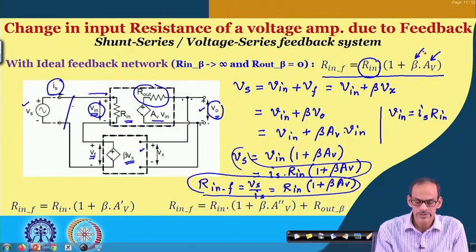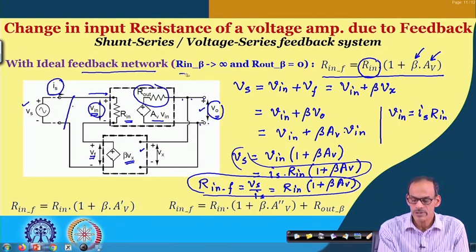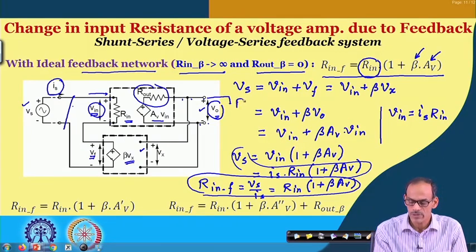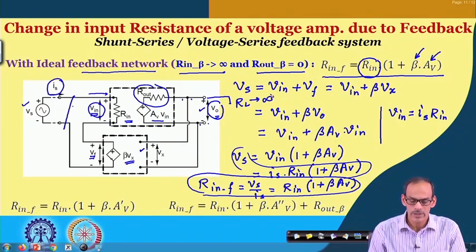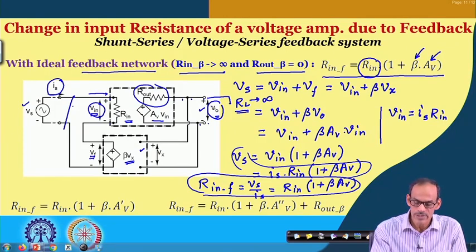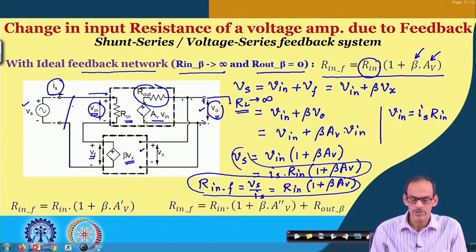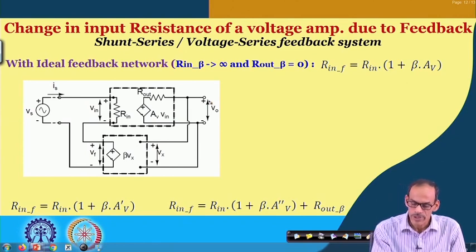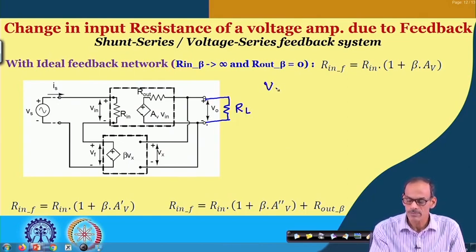Here we have assumed that the feedback circuit is ideal: input resistance of the feedback network is infinite, output resistance is 0, and the load is infinite. Now let us consider the practical situation where there may be a finite load R_L. Due to this, the voltage available at the output port may not be the same as the internally developed voltage. So let us consider R_L is finite. If we put R_L here, then V_o = V_x = A_v × V_in × R_L / (R_L + R_out).